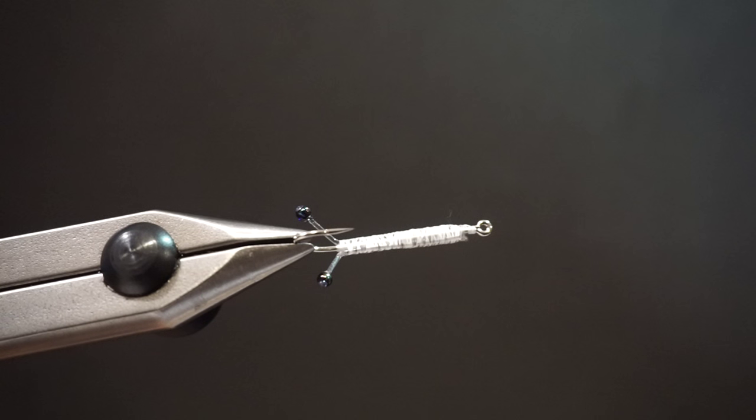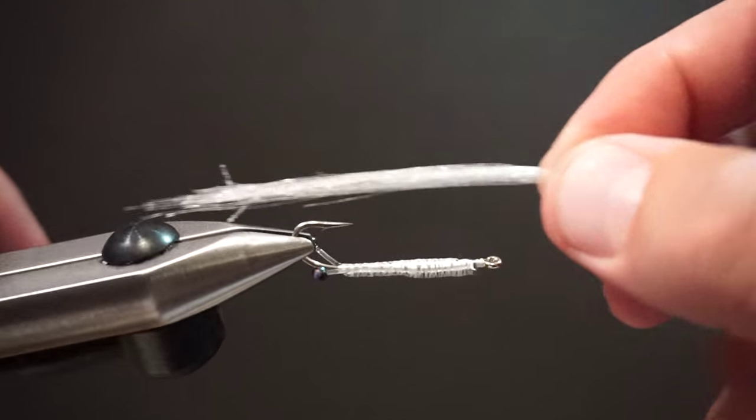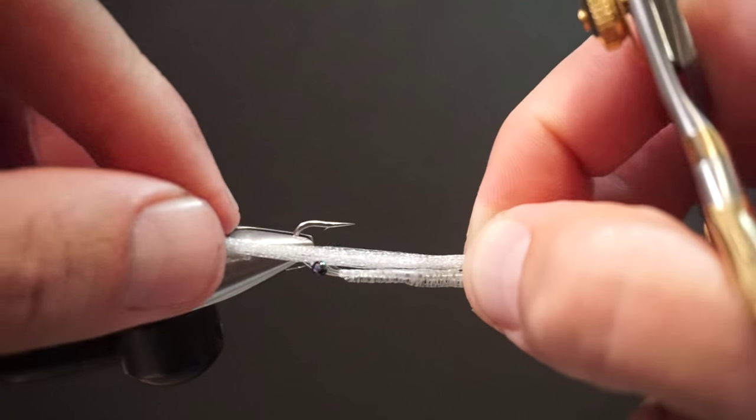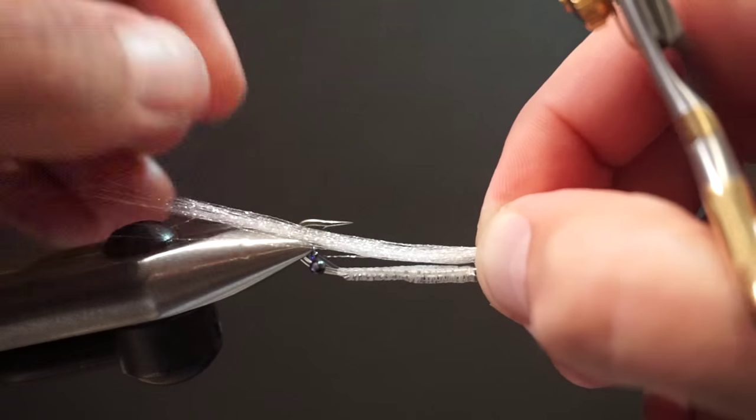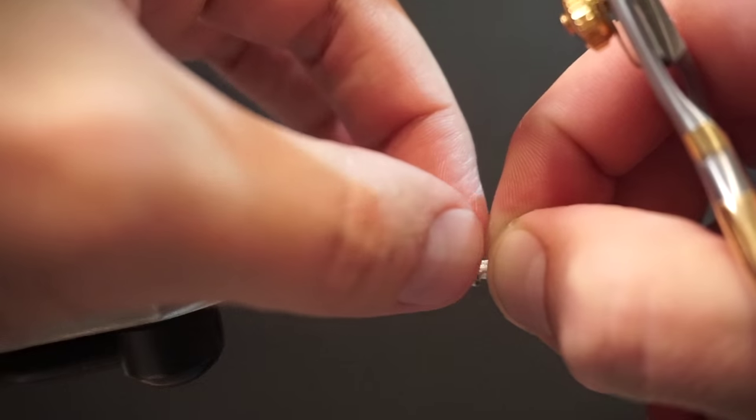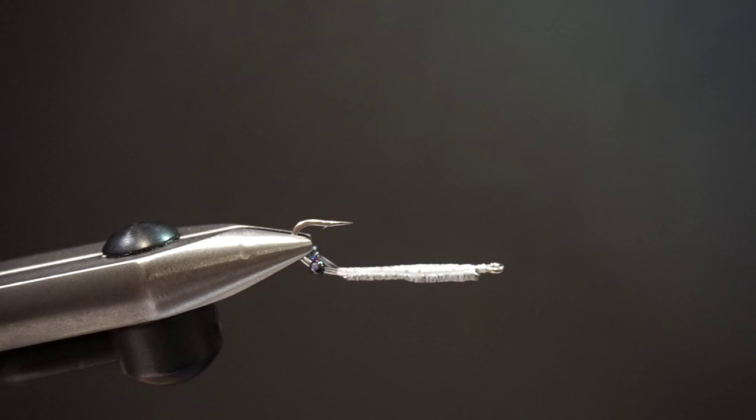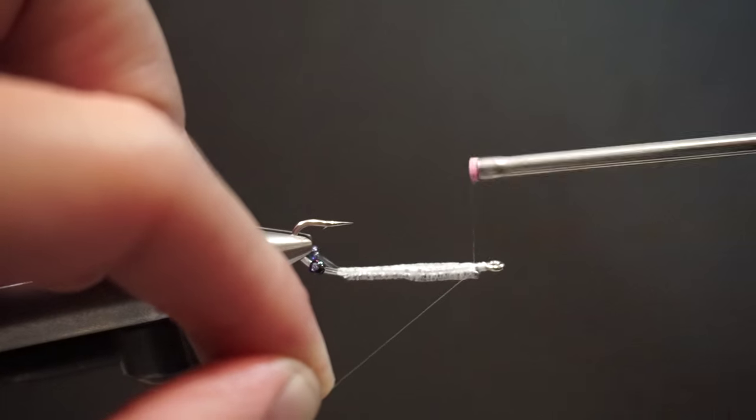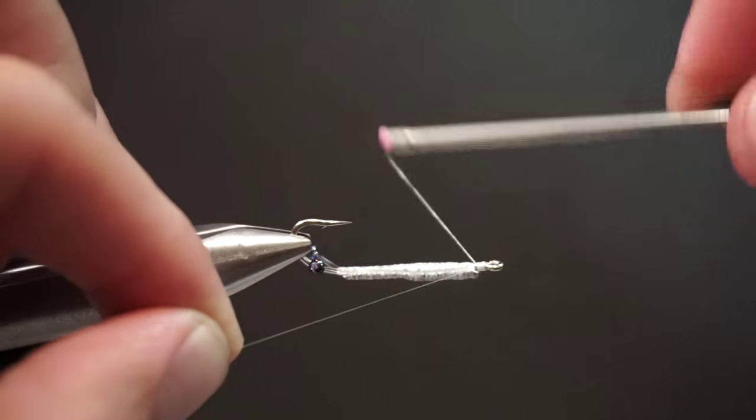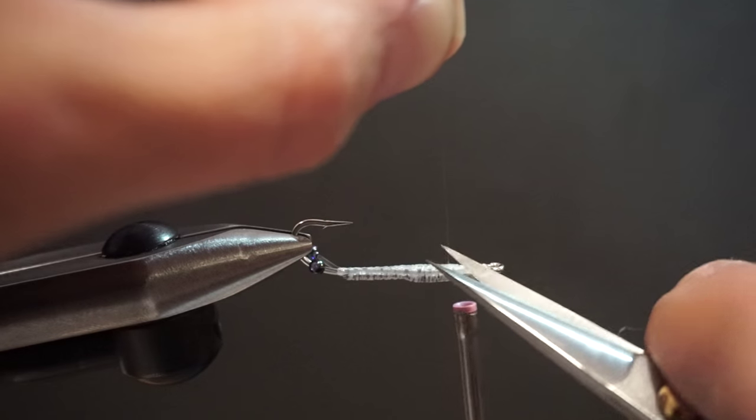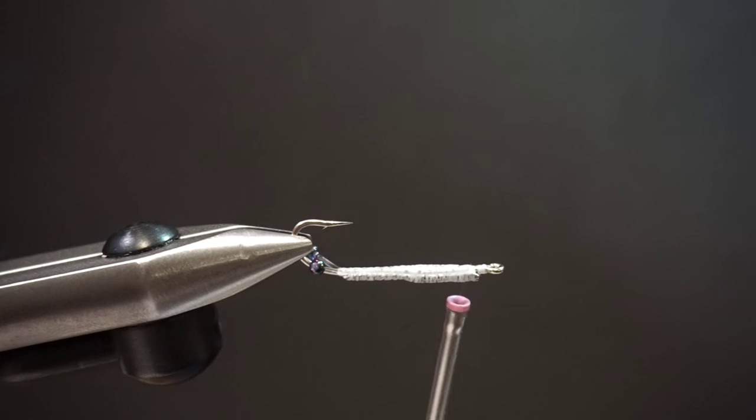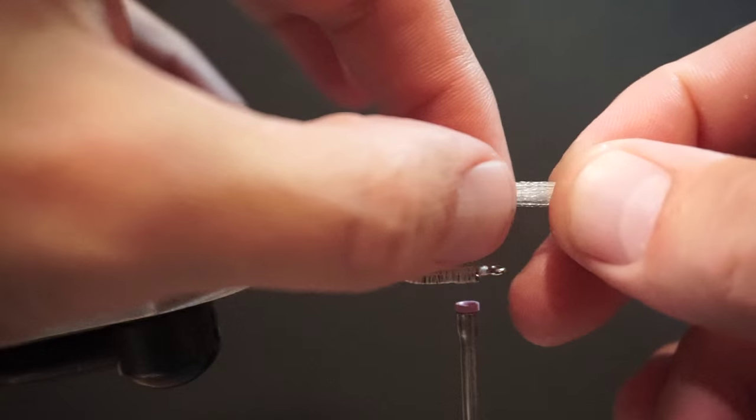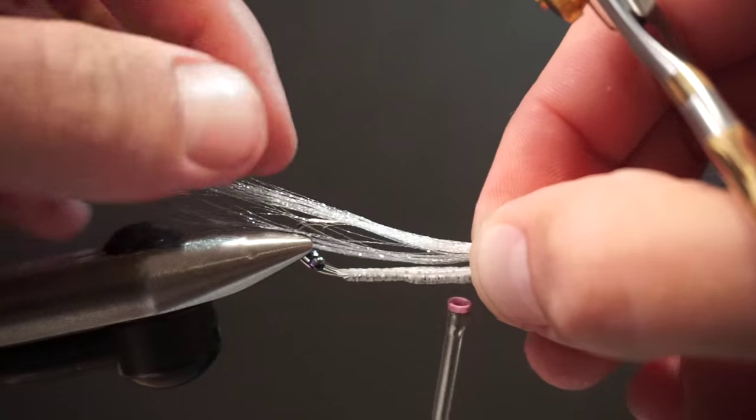So the next thing we're going to do is tie in a little bit of fluorofiber. It's a real cool material. It kind of captures the surrounding light and it's real translucent, so it imitates these small shrimp that the bonefish are feeding on pretty well. I'm going to switch over to mono here. The mono gives it a nice glassy translucent look that we're kind of going for. So we don't want this to extend too far past the bend of the hook. This is a smaller pattern.